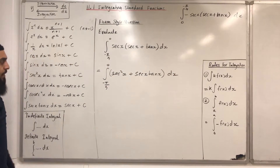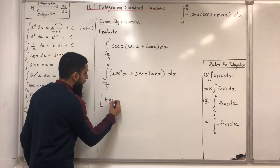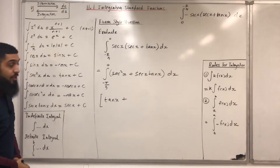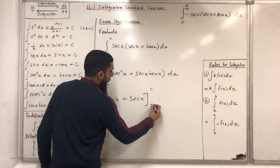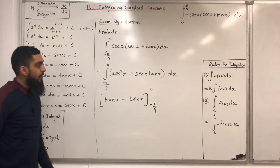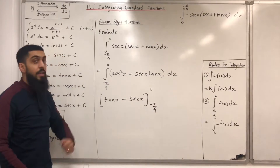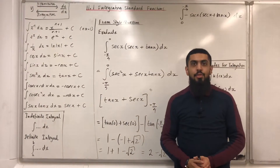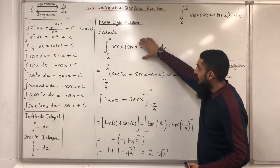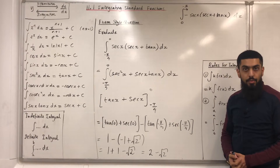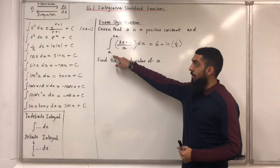Integrating: sec²x integrates to tan x, and sec x tan x integrates to sec x. So in square brackets we have tan x plus sec x, evaluated from minus π/4 to zero. Substituting zero, then taking away the substitution of minus π/4 — making sure the calculator is in radian mode — we get that this definite integral equals 2 minus √2.